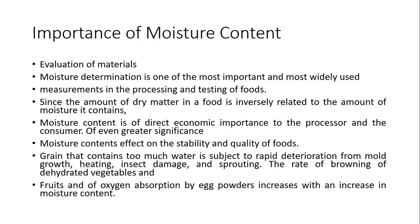On the basis of moisture content, there are three major categories of food commodities. Number one: stable foods that contain moisture content less than 20%. Second: semi-perishable foods with moisture content from 40 to 70%. Third: perishable foods with free water content above 70%. Grain that contains too much water is subject to rapid deterioration from mold growth, heating, insect damage, and sprouting. The rate of browning of dehydrated vegetables and fruits, and oxygen absorption by egg powder, increases with an increase in moisture content.